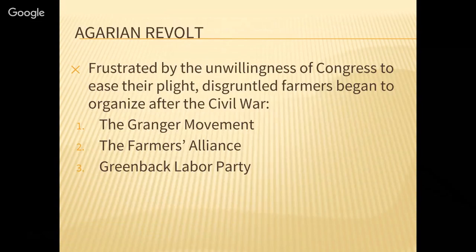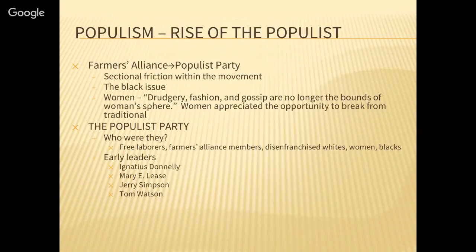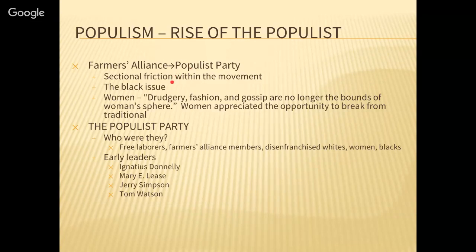Frustrated by the unwillingness of Congress to ease their plight, disgruntled farmers began to organize after the Civil War. We have the Granger Movement, which was largely aimed at railroads; the Farmers Alliance; and the Greenback Labor Party — the party that was pushing for currency reform. Ultimately, the Farmers Alliance, which we learned about in the New West unit, is going to morph into what we call the Populist Party. The Farmers Alliance falls apart, and in its place the Populist Party will take its place.